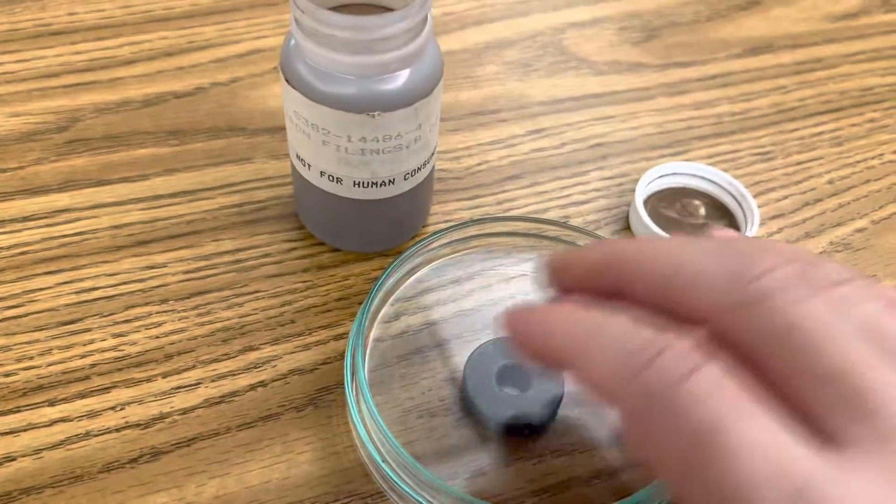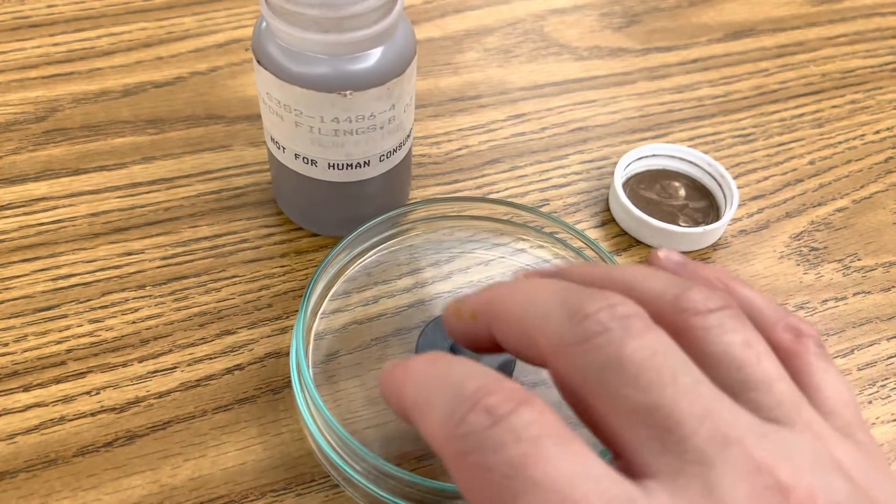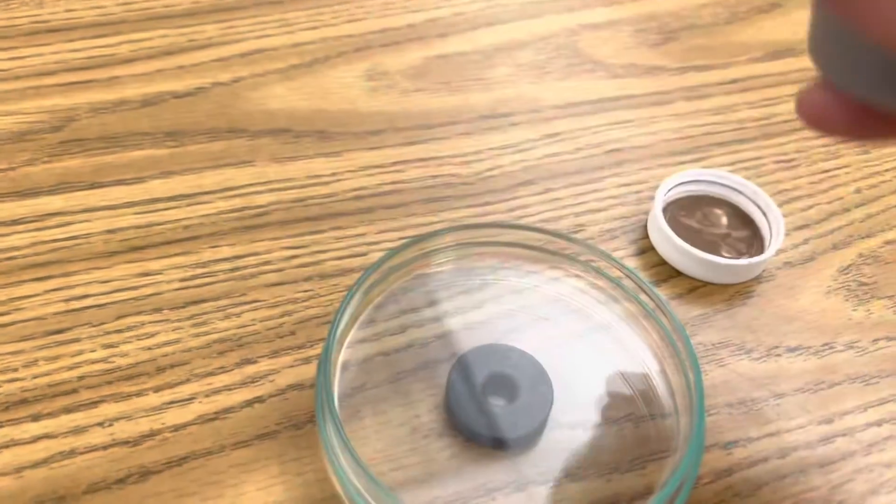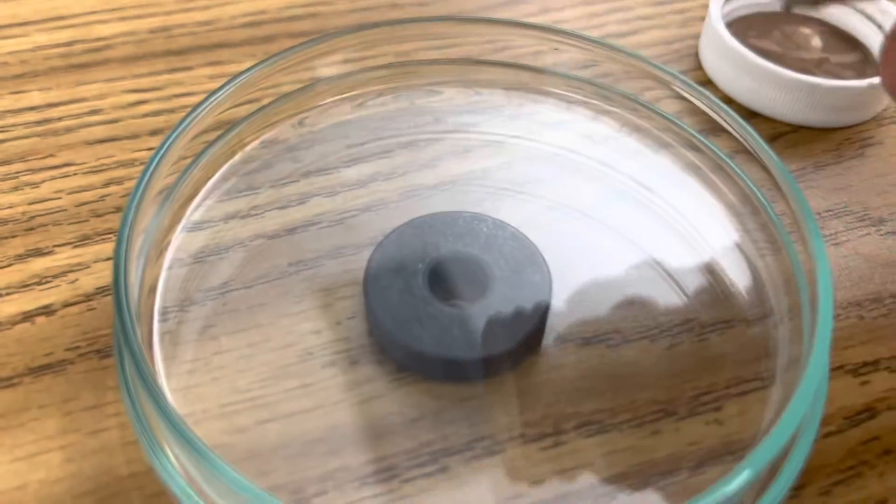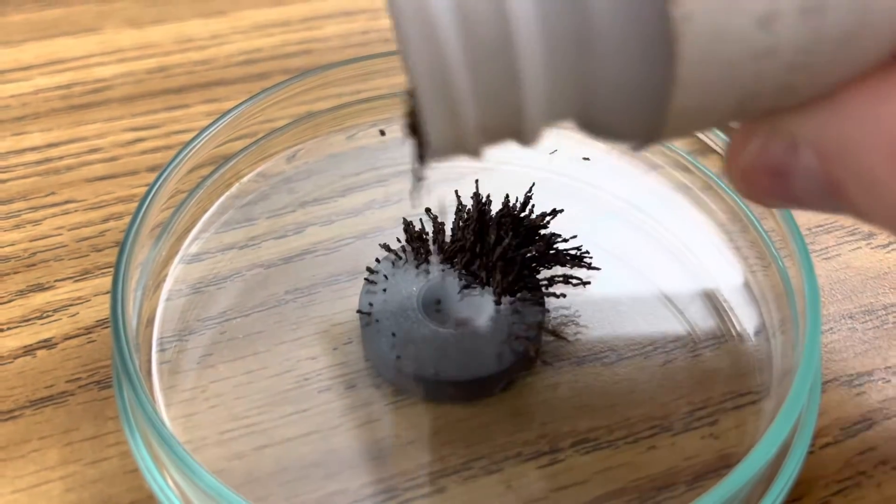And this way you can pour iron filings over it but they stay inside the dish and you don't lose them. This is a great way to demonstrate magnetic fields as well.